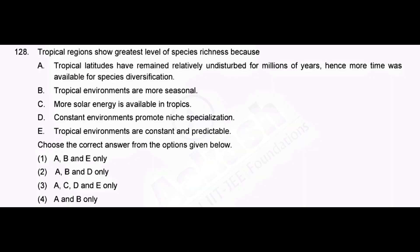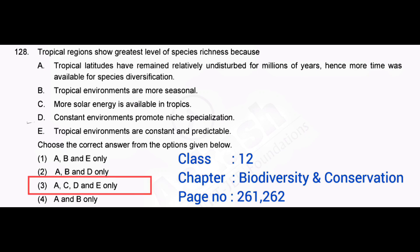Tropical regions show the greatest level of species richness because — correct answer: option 3, A, C, D and E only.